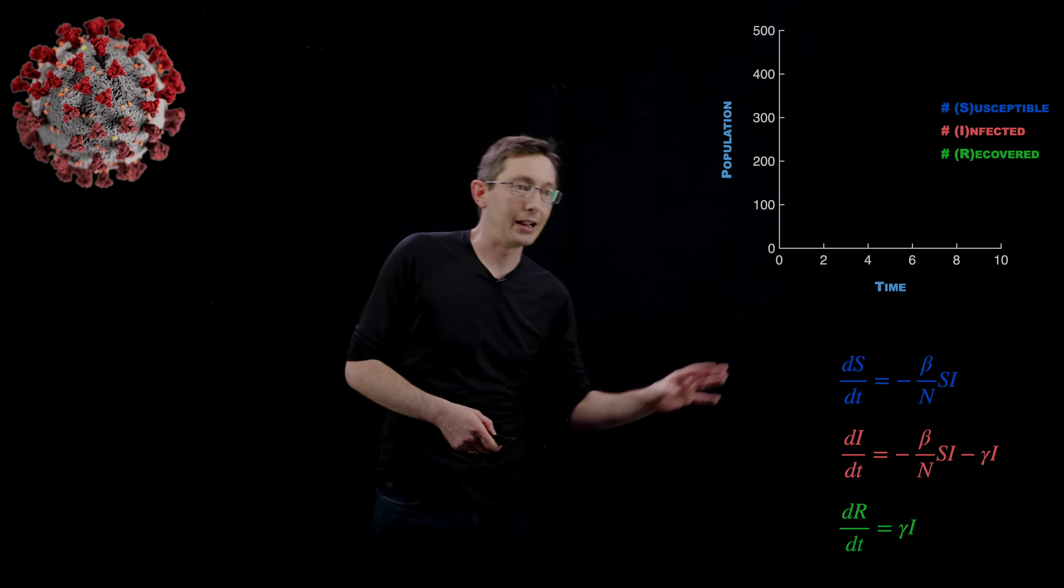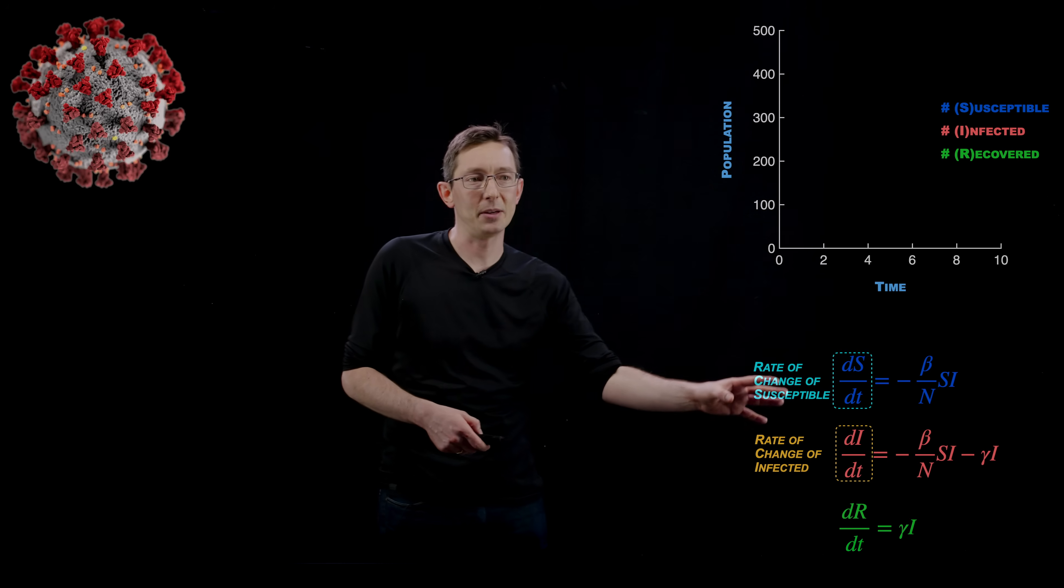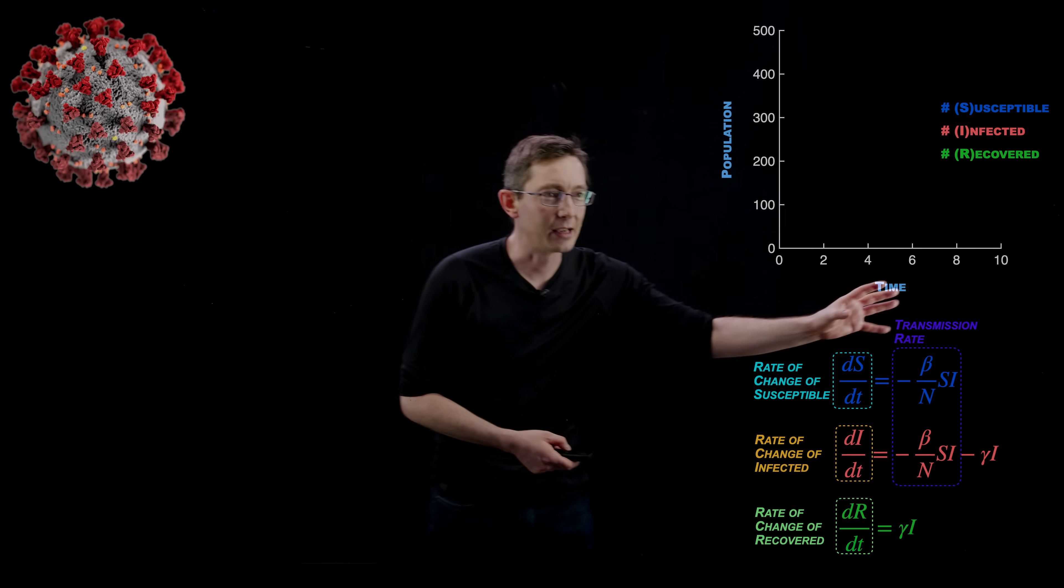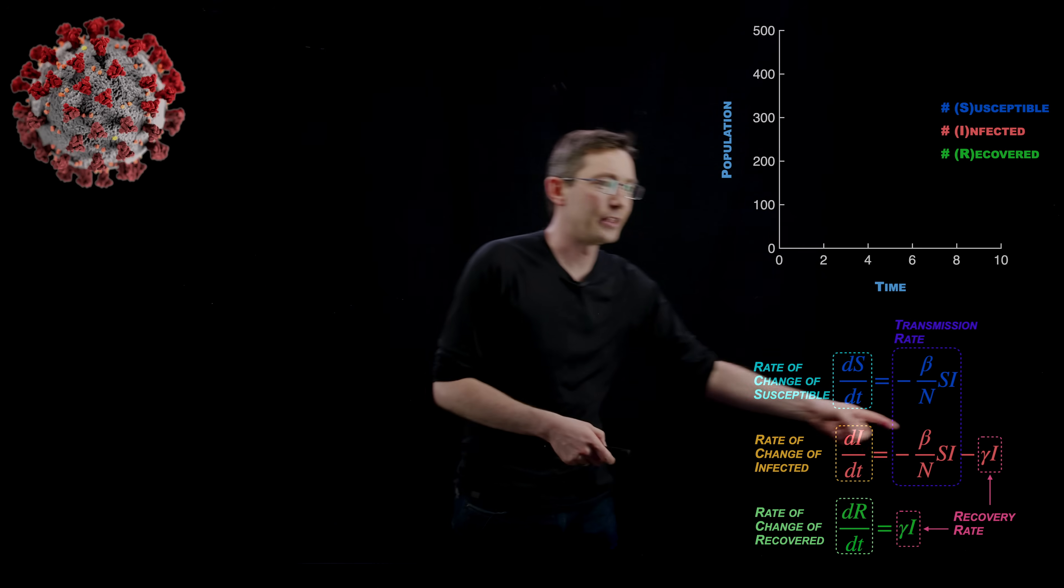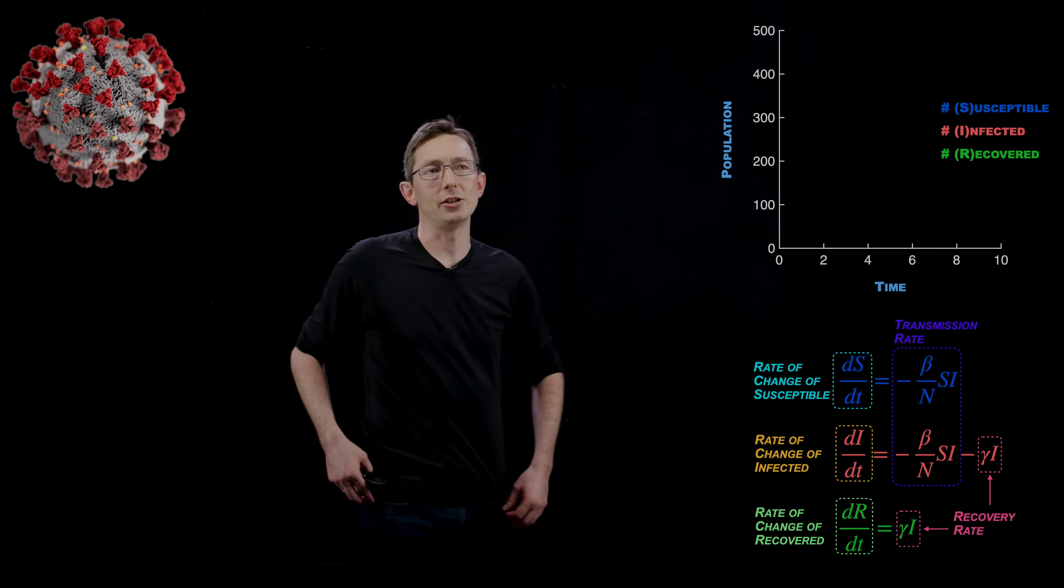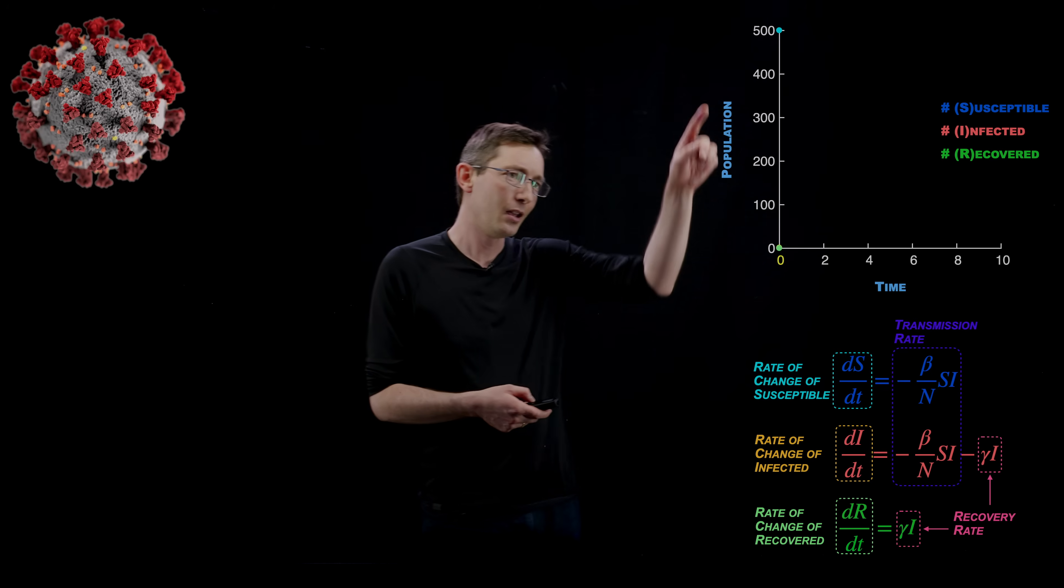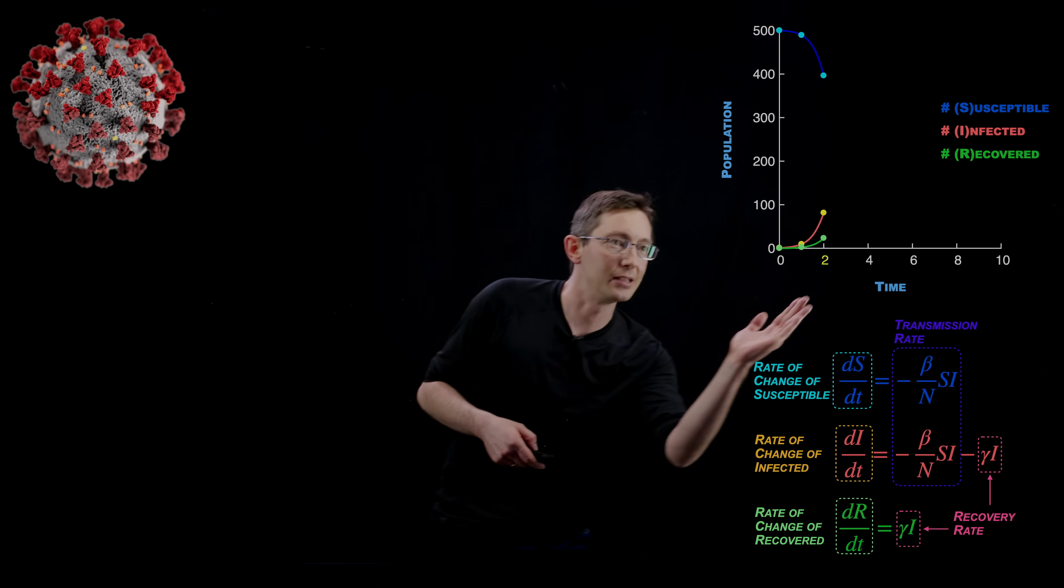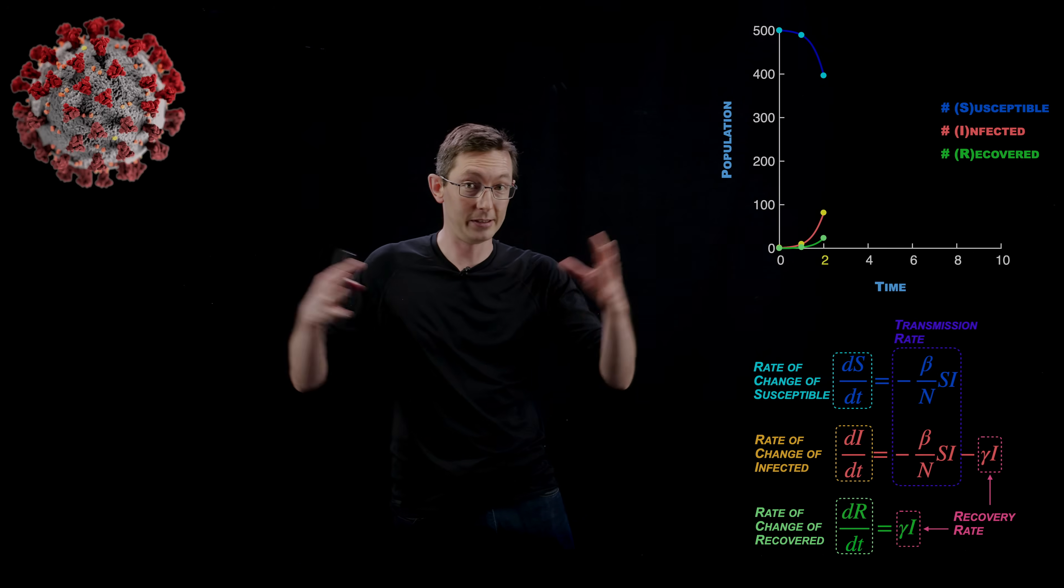Again, it's governed by a very simple set of differential equations that someone wrote down. The rate of change of my susceptible, infected, and recovered populations are given by these functions on the right. There's some transmission rate that's roughly proportional to how many susceptible and infected people there are. And there's a recovery rate from infected to recovered. With this very simple differential equation, if you start with a population, in this case, let's say it's a community of 500 people that are healthy, you can watch this progress in time through this dynamical system. You can see that for short times, the amount of infected people does grow exponentially. When you release a virus into a new population, it grows exponentially.